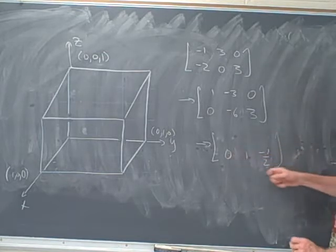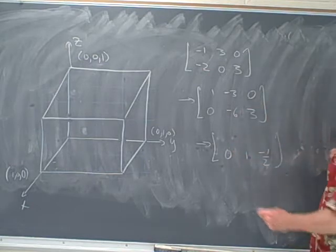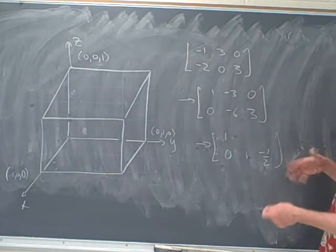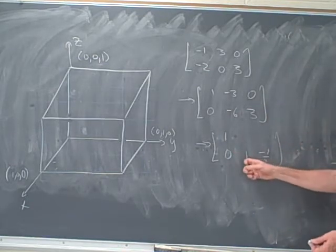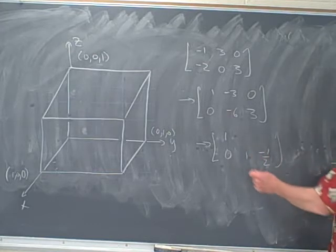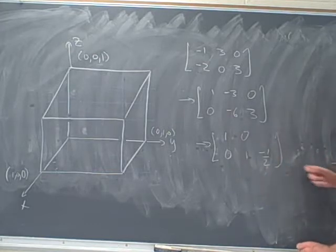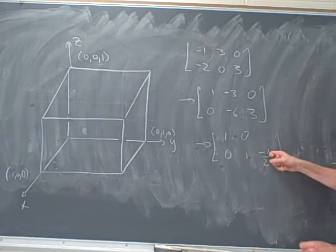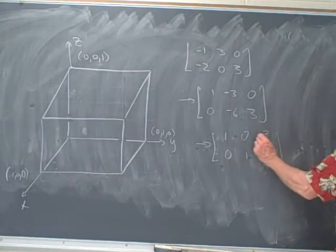And then let's take this new second row, add it to the first row, so I'll add 3 times it to the first row. So I get 1, 0, and then multiply through by 3, and add, and so I get negative 3 halves.